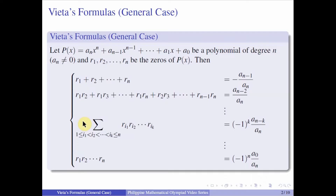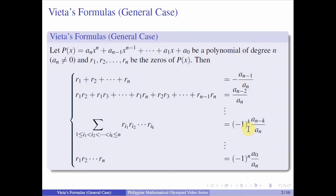Then, by the Vieta's formulas: r sub 1 plus r sub 2 plus dot dot dot plus r sub n is equal to negative a sub n minus 1 over a sub n. We have r sub 1 times r sub 2, plus r sub 1 times r sub 3, plus so on and so forth up until r sub n minus 1 times r sub n, equals a sub n minus 2 over a sub n. The general rule is that you take k roots out of the n roots, take their product, sum all possible ways of doing this, and this equals negative 1 raised to k times a sub n minus k over a sub n.